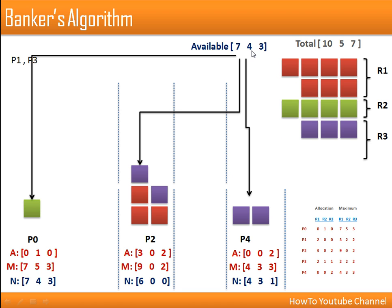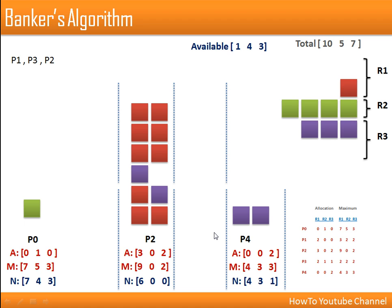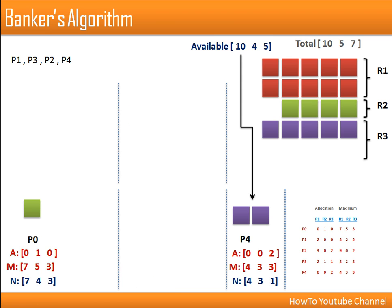After releasing P3's resources, available is 7, 4, 3. This can satisfy P0's need of 7,4,3, P2's need of 6,0,0, or P4's need of 4,3,1. We go for P2. All required resources are allocated to P2, leaving 1, 4, 3 in hand. P2 completes and releases its resources, giving us 10, 4, 5, which can satisfy requirements of P4 or P0.